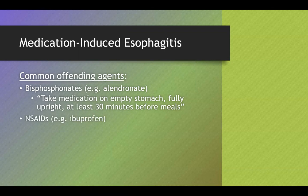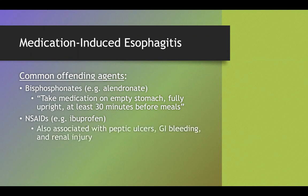NSAIDs can cause esophagitis, just like they can cause gastritis and gastric ulcers. They can also cause renal injury, GI bleeding, and peptic ulcers. Those are the main things you need to know about NSAIDs.